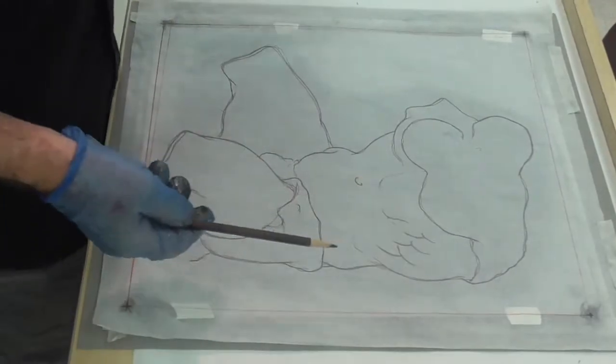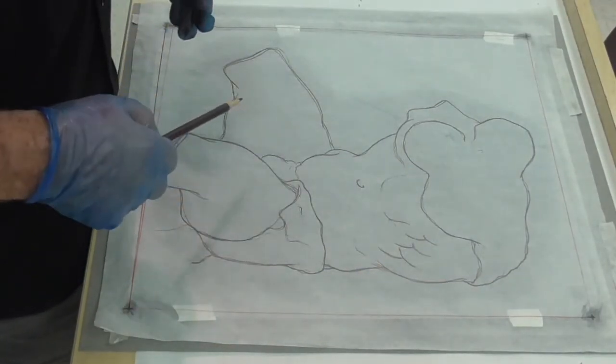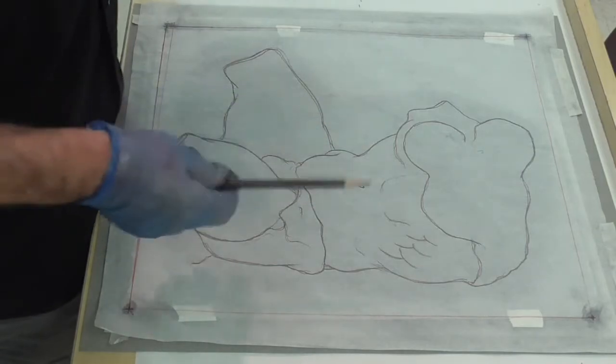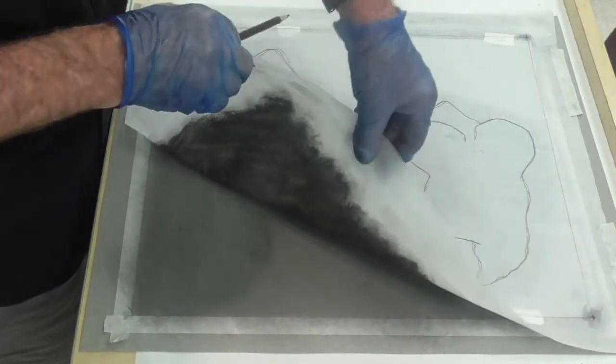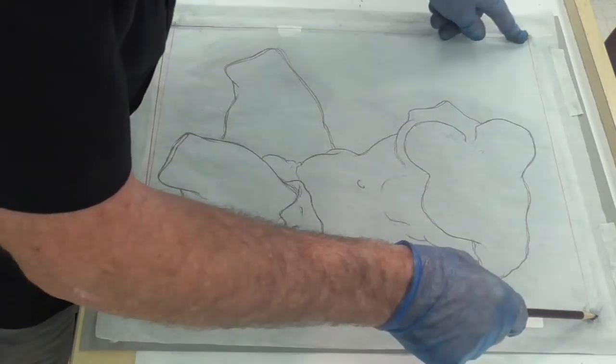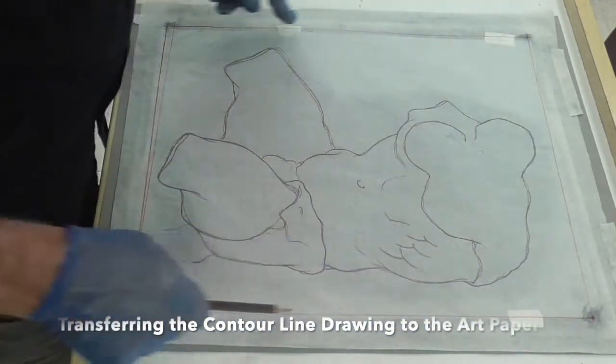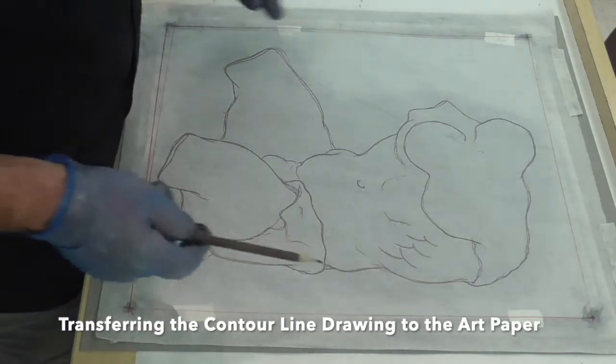So now we're going to transfer our drawing that we just put the compressed charcoal on the back of. It's still there, there's two layers there. I was able to see through well enough to be able to place it just inside the edges of the tape.